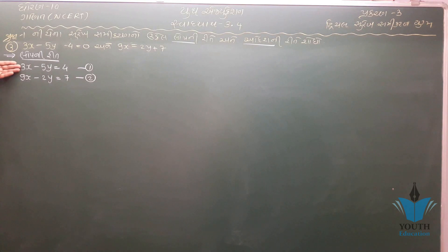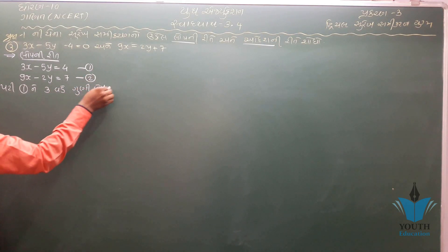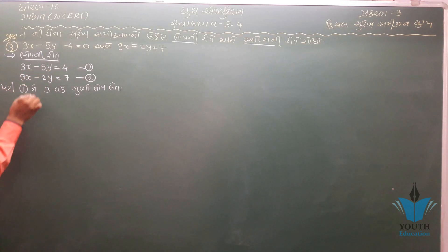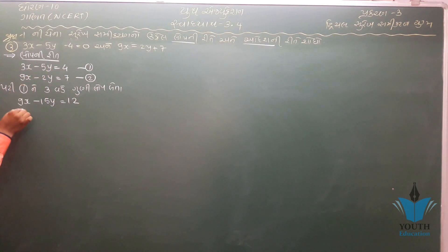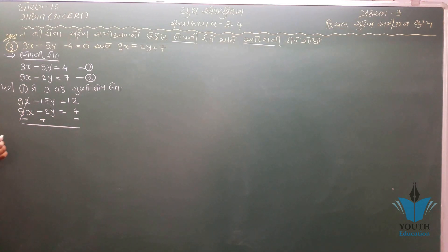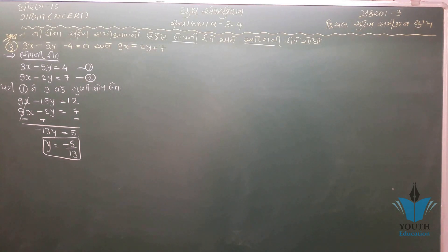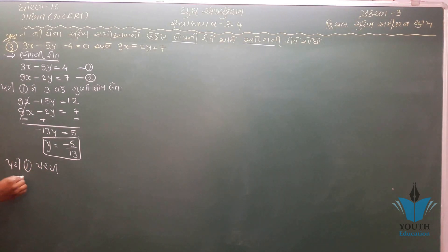x ને સરખો કરવા પહેલા સમીકરણ ૧ ને ત્રણ વડે ગુણો. 3x - 5y = 4 — 3x minus 5Y.